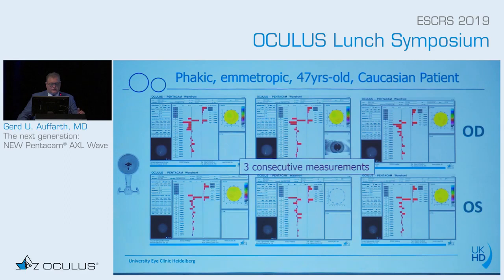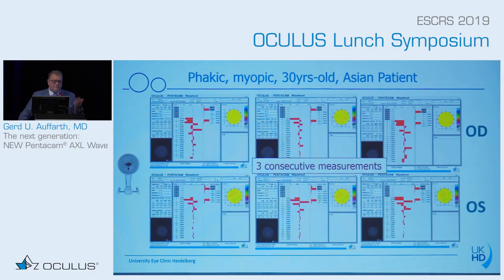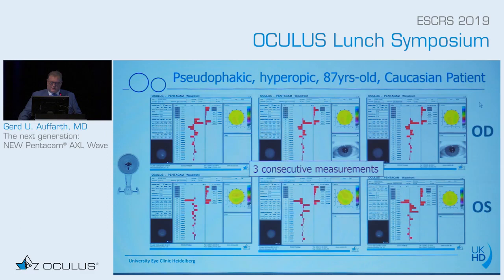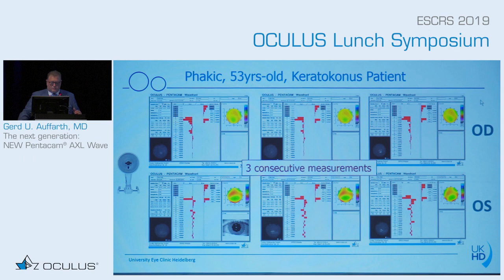Looking at individual patients with right and left eye, three consecutive measurements, you can see how well they fit together — measured one minute apart. This is a 47-year-old Caucasian ametropic patient with near-identical values. Here is an Asian myopic patient — there are no significant differences measuring different ethnicities. In a hyperopic older cataract patient and pseudophakic patient, values are consistent, and a keratoconus patient also shows very consistently measured high-order aberrations.